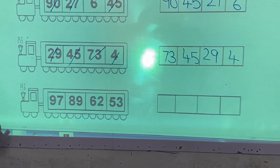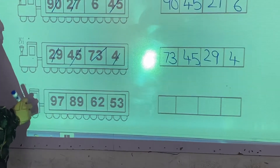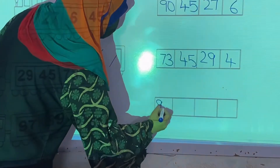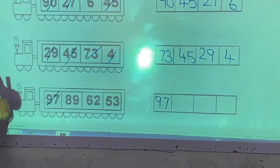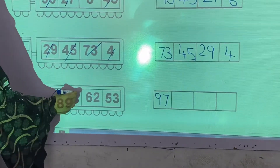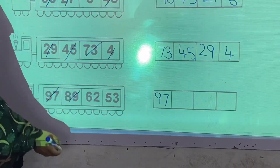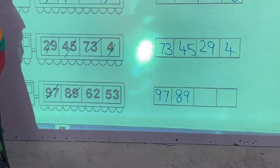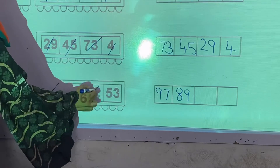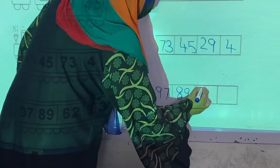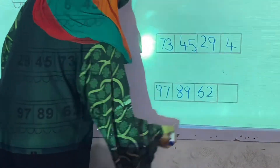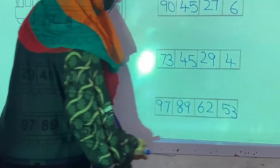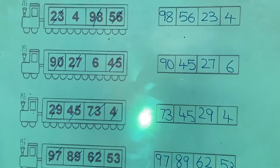Now in example number 4. 97 is the greatest number here, so in the first box we write 97. After 97, 89 is the greatest number, so we write 89 in the second box. After 89, 62 is the greatest number — 62 in the third box. And in the last box, 53. In this way you will complete this activity.